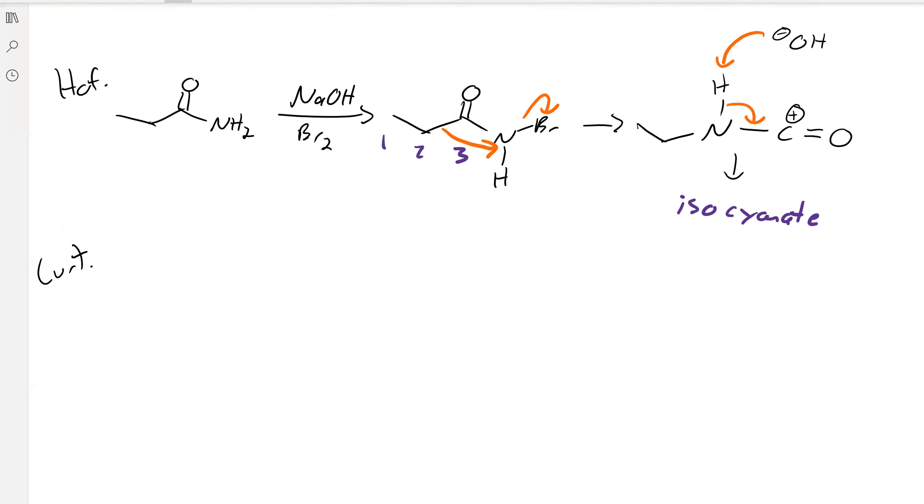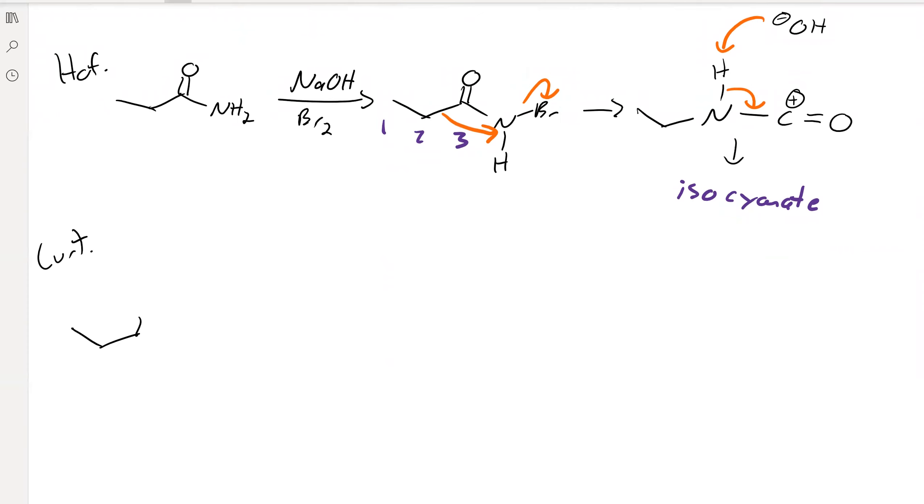Curtius rearrangement essentially just does the same thing. We've got our azide here, or at least a resonance structure of your azide. And then we've got carbons number 1, number 2, number 3. The carbon 2-3 bond is going to break, attack this nitrogen, and then this right here is just going to leave as N2. So you're going to lose nitrogen gas, and that's the same thing that's happening in the Hoffman rearrangement, except our leaving group is bromine.